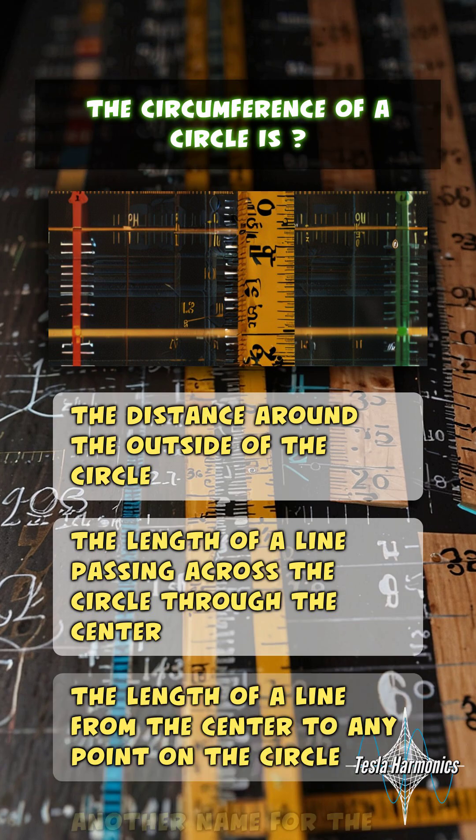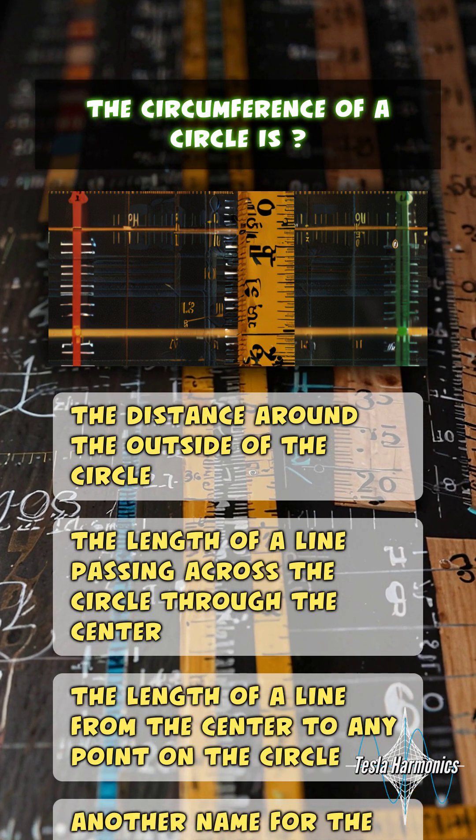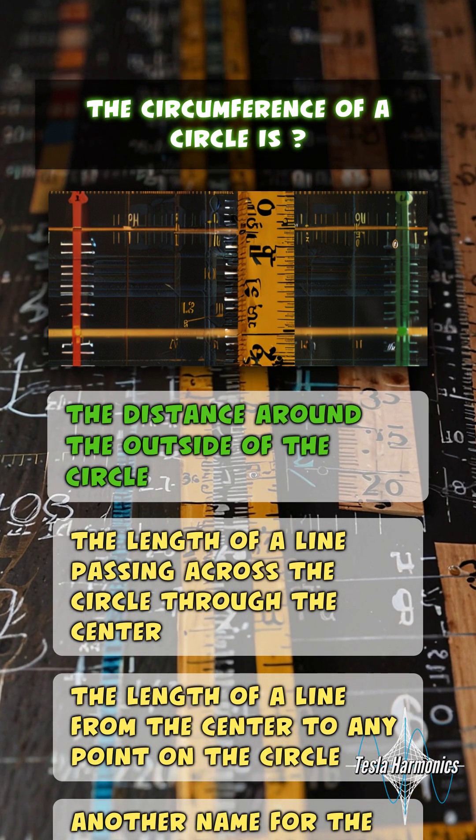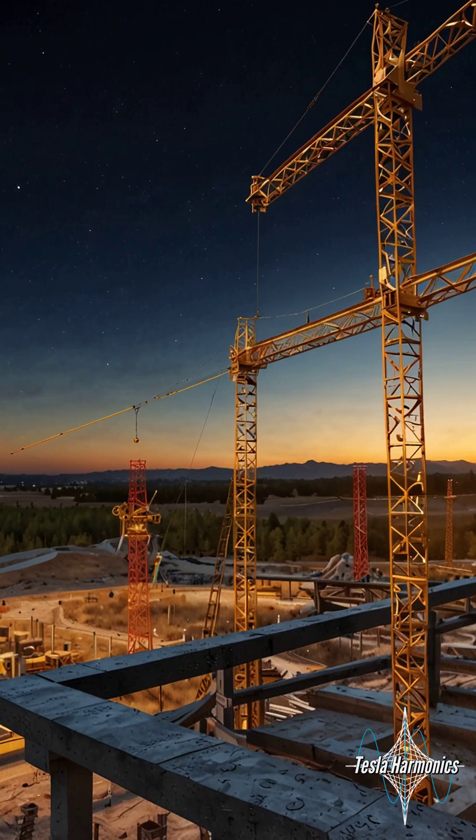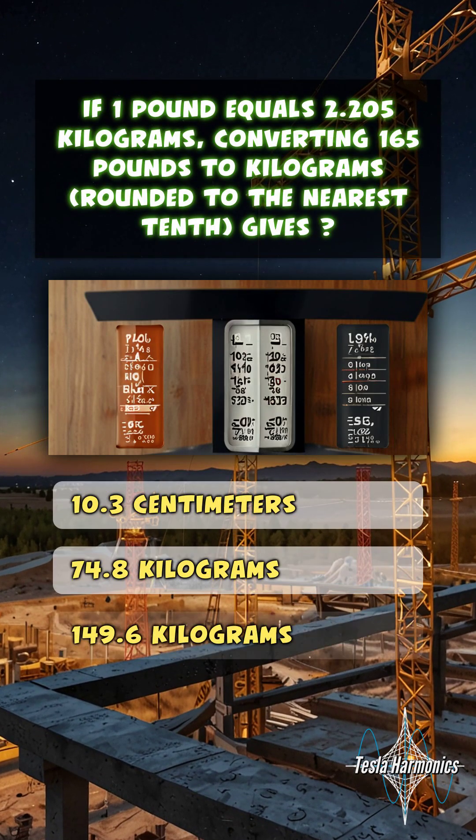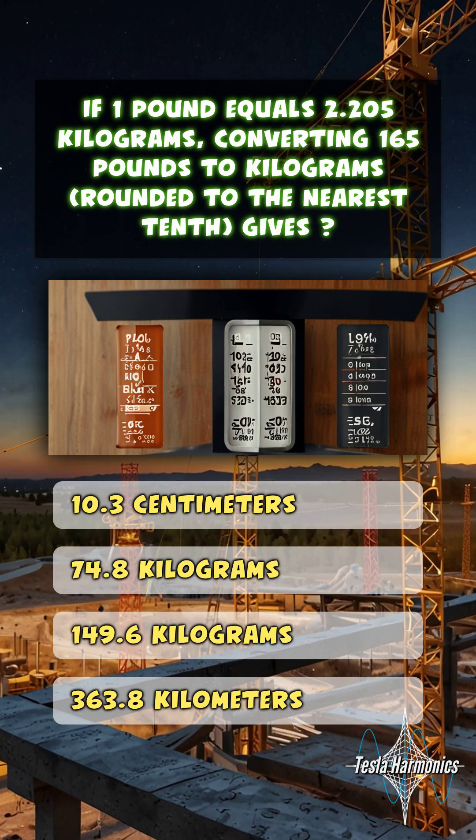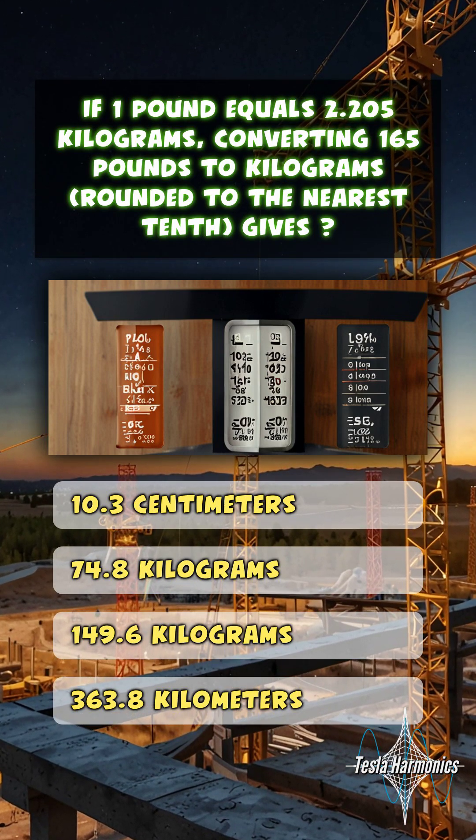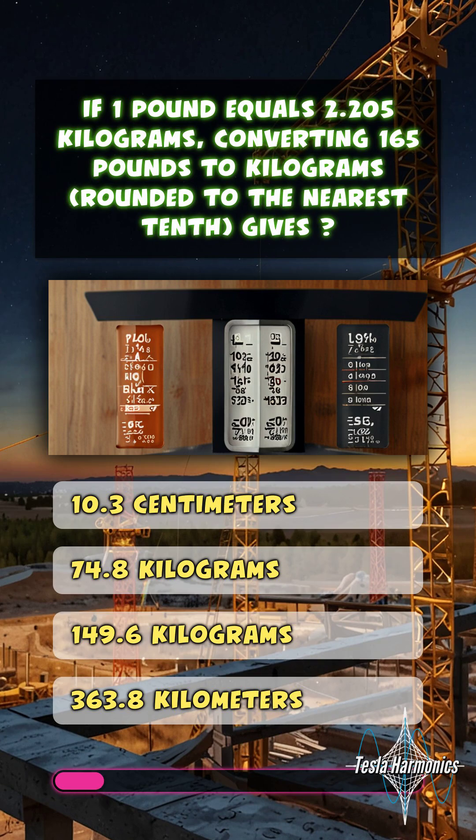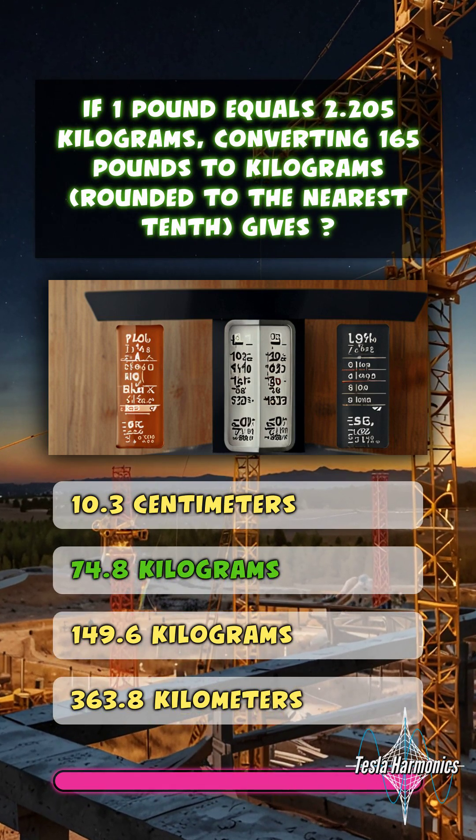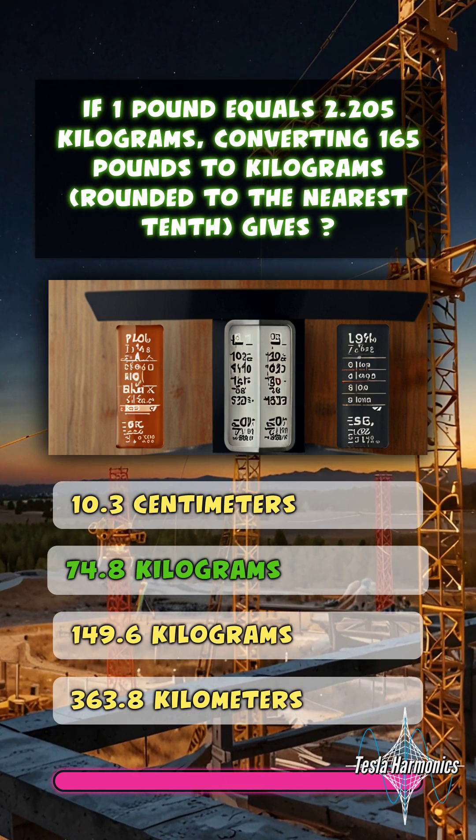The circumference of a circle is the distance around the outside of the circle. If 1 pound equals 2.205 kilograms, converting 165 pounds to kilograms rounded to the nearest tenth gives 74.8 kilograms.